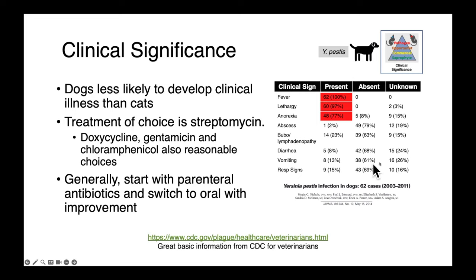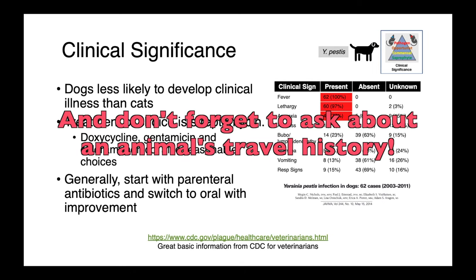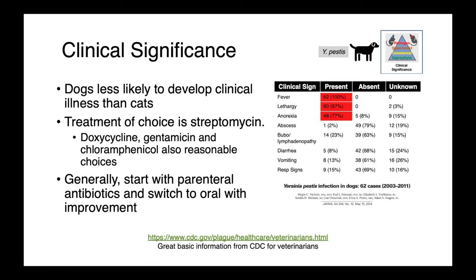This is a 2014 study from JAVMA describing the clinical signs present in dogs diagnosed with plague. It's important to point out that these are animals who were diagnosed — many more dogs will have had clinically inapparent disease, so this is a biased population. Having said that, of these 62 cases, 100% were febrile and lethargic, and many were also anorexic. So if you're living in an endemic region, you may need to consider this as a possible differential for febrile and lethargic animals.